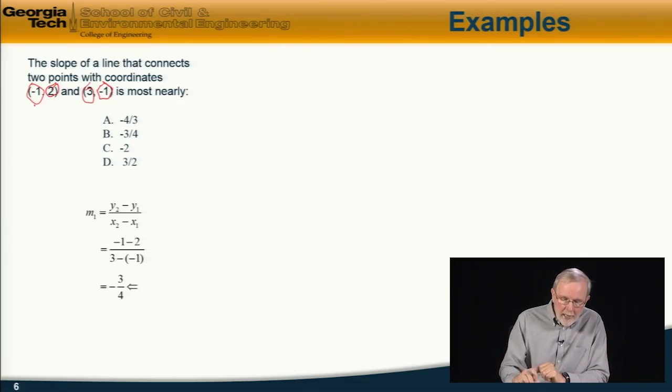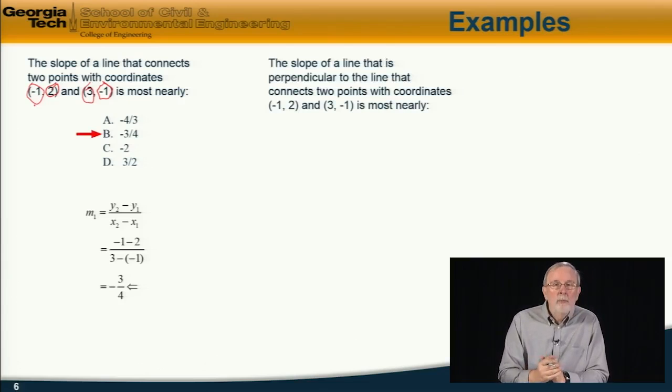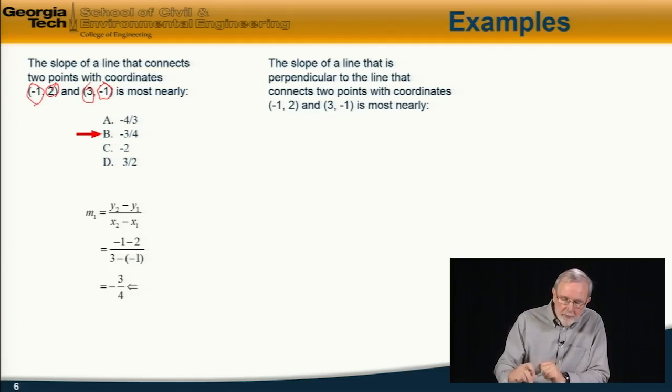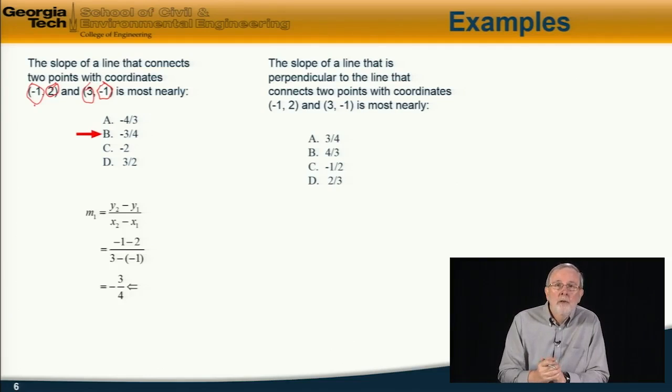So the answer, the slope, is negative or minus 3/4, and the answer is b. The second problem relating to the same two points is that we now want to compute the slope of the line which is perpendicular to the line which is connecting those two points. Which of these alternatives is it?